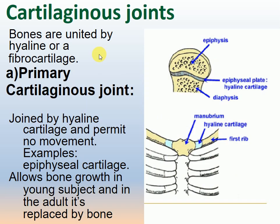Cartilaginous joints: here, bones are united by hyaline or fibrocartilage. We have two types of cartilaginous joints: primary and secondary. In primary cartilaginous joints, bones are joined by hyaline cartilage and permit no movement.